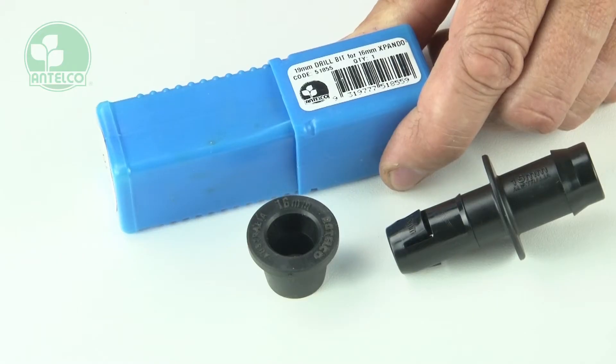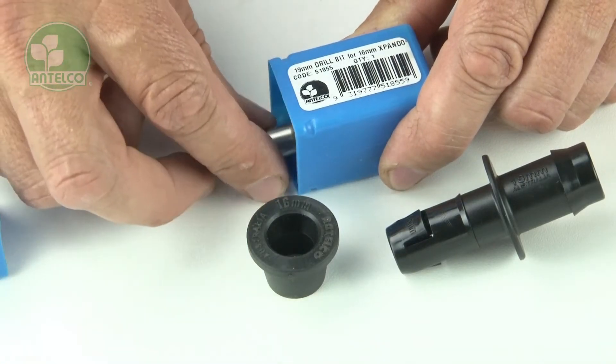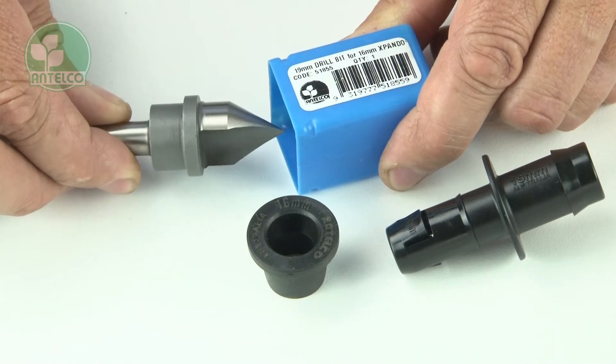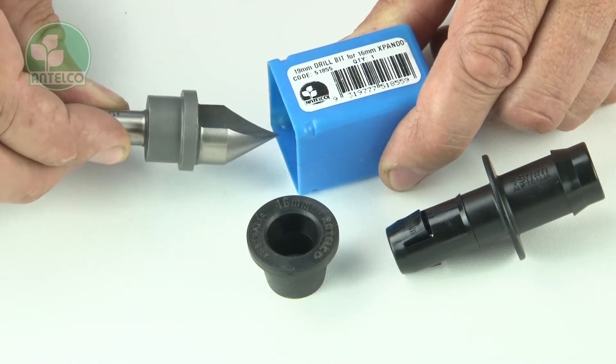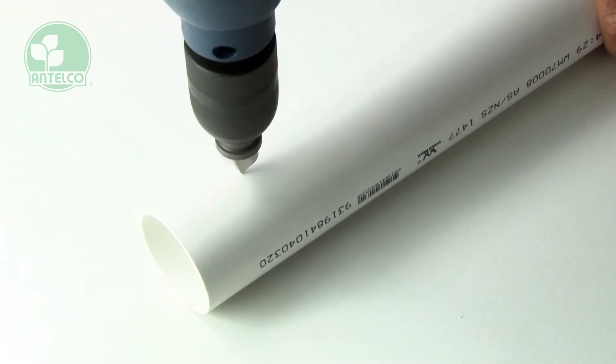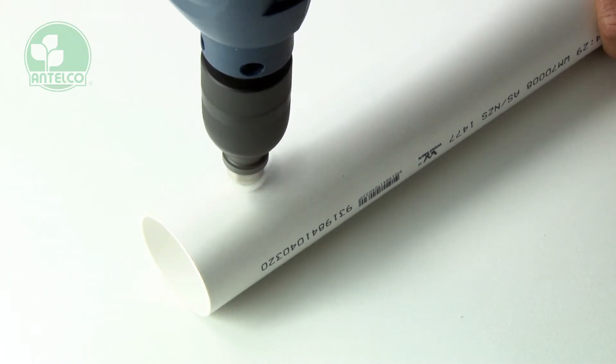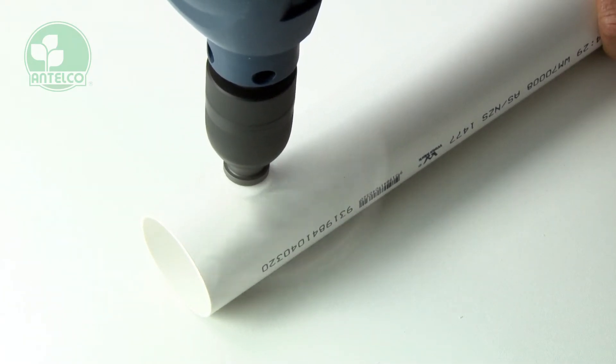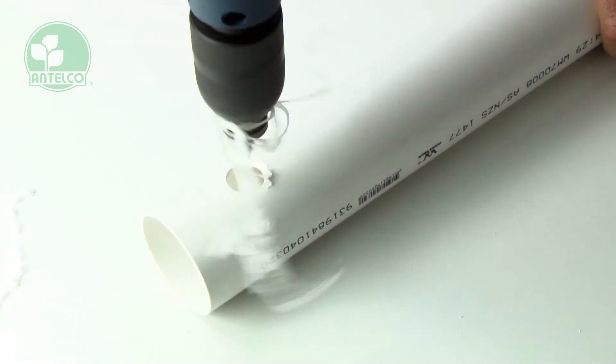This is the number 19 Entelco drill bit which we will use to drill clean round holes to suit the 16mm Xpando. Don't put too much weight on the bit to ensure you don't crack the PVC. If you keep your drill speed up, most of the swarf will be pulled out of the hole as you go.